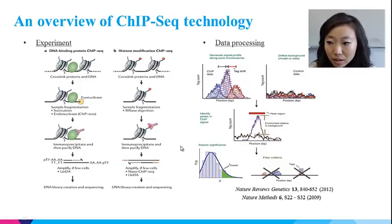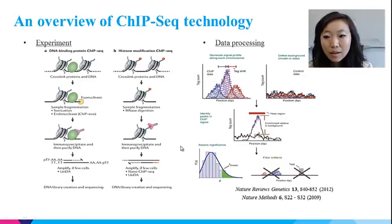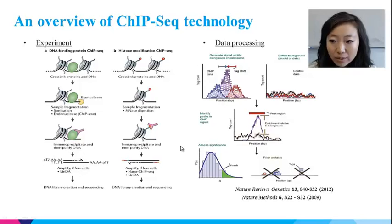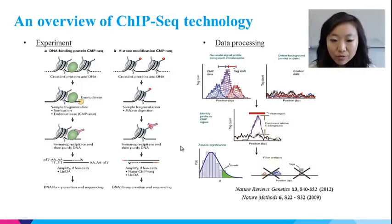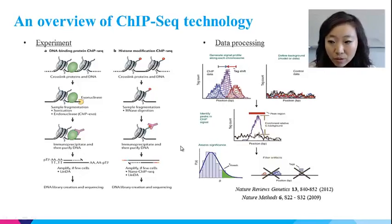Typically, the peak calling software will identify pseudo peaks that sit at both ends of the actual peak based on the sequence profile, and give the most probable location of the actual peak by shifting around it according to its statistical algorithm. At the same time, the control dataset is used to define the background noise. For each peak candidate, the signal intensity will be compared to the background, and a significant peak is called only if it is enriched compared with the noise.